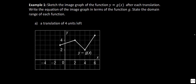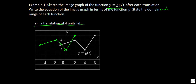Example 1 says: sketch the image graph of the function y equals g of x after each translation, write the equation of the image graph in terms of the function g, and state the domain and range. Part A is a translation of 4 units left. All you're going to do is take the known values and move those 4 units to the left. The shape is not going to change at all, so you'll see the same graph just shifted over.